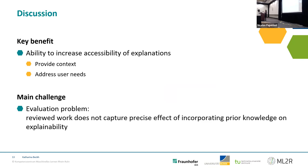To sum up, the key benefit of including prior knowledge is the ability to increase the accessibility of explanations, providing more context and addressing user needs. One clear challenge we saw in the papers — and this is a general problem with explainability — is how to evaluate it: how do you really measure the impact of integrating prior knowledge and its precise effect on the explanation component?